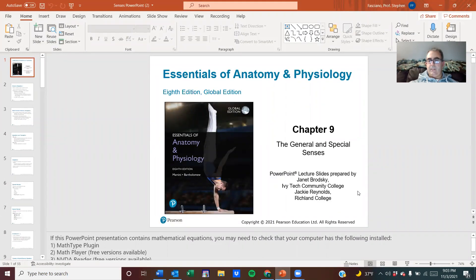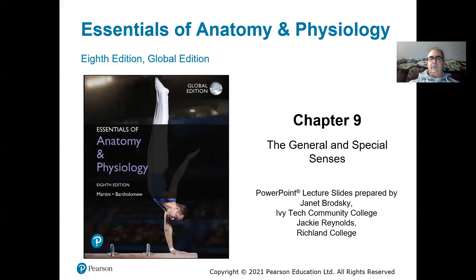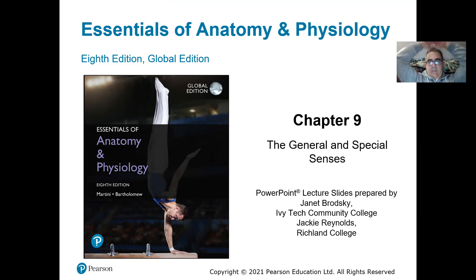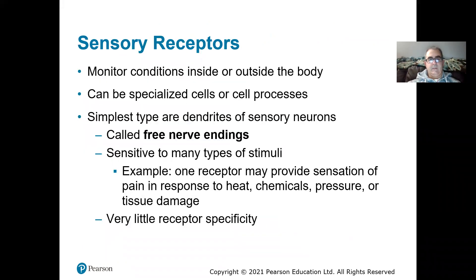So chapter nine: the general and special senses. We always cover the nervous system and the senses at the same time or one right after the other. The senses are really just an extension of the nervous system. In the nervous system, we learned about the neurons and how they have dendrites that receive a signal, and the signal goes to the cell body and then it moves down the axon. Senses are always studied with the nervous system because sensory receptors are really just neurons.